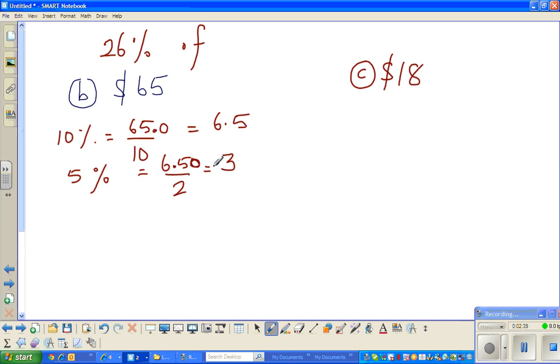So instead of writing 6.5, you can write 6.50. You can think like this: half of 6 is 3 and you can put a point here, and half of 50 is 25. Just like that. Then it'll be useful to get 1 percent.